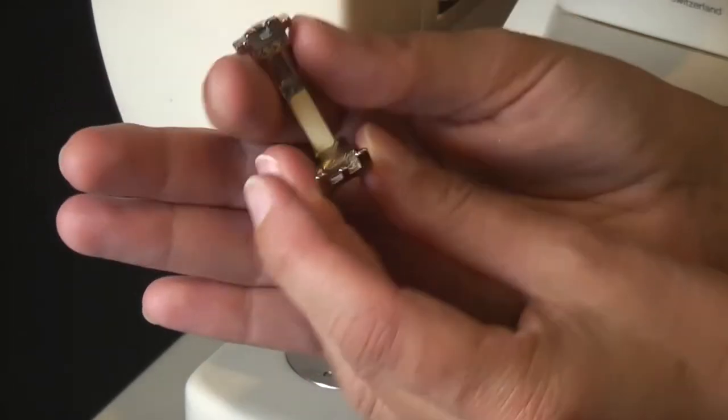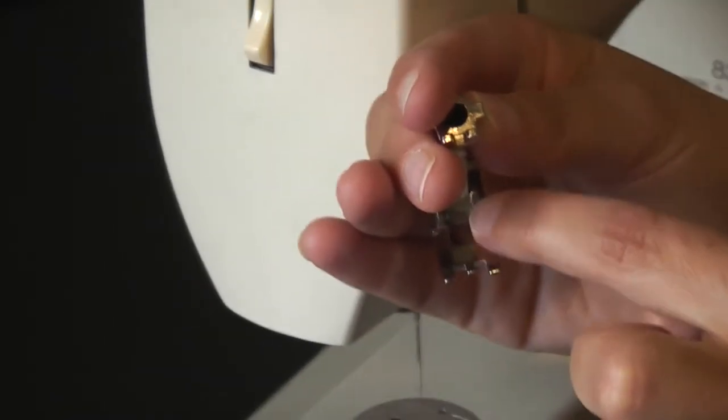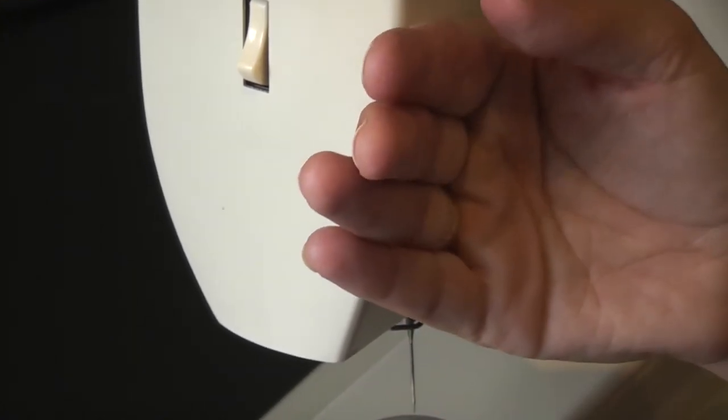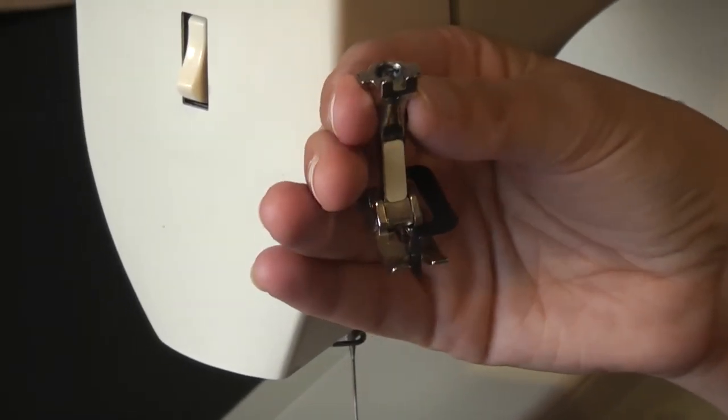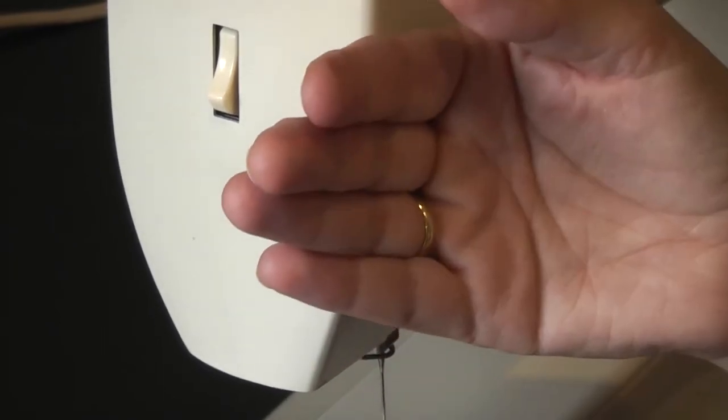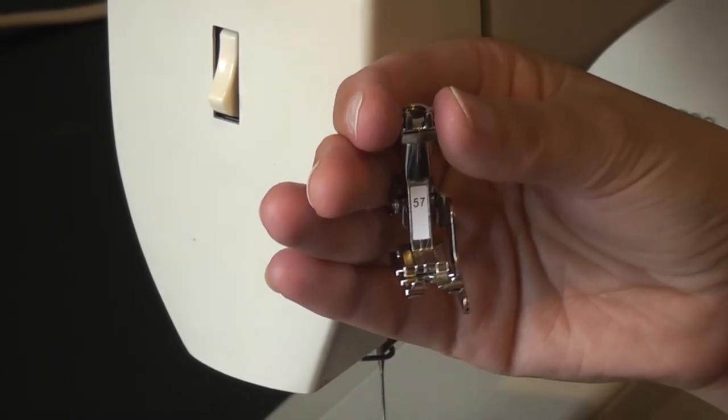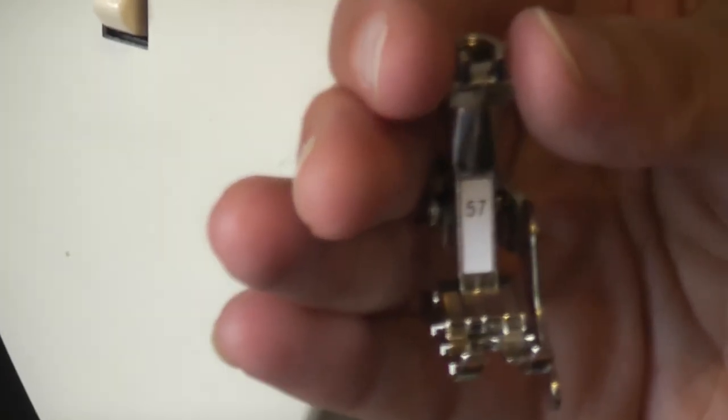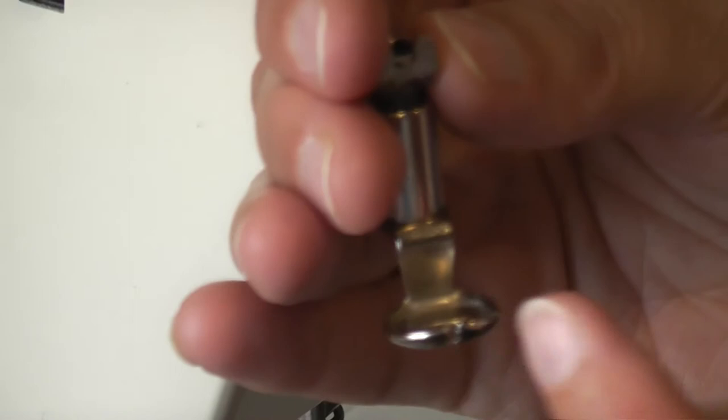This here is a buttonhole foot. This is a blind hem foot, which are absolutely wonderful when you're hemming skirts, dresses, trousers, anything where you cannot be bothered sewing it by hand but you want to look as if you had sewn it by hand. This is a quarter inch foot which is used for patchworking. And this is a darning foot, which I've used for my free motion quilting. So you can start sewing all sorts of squiggles and swirls to your heart's content.